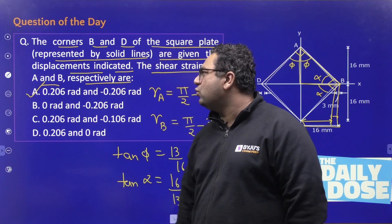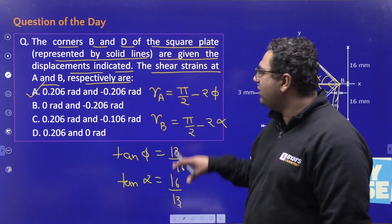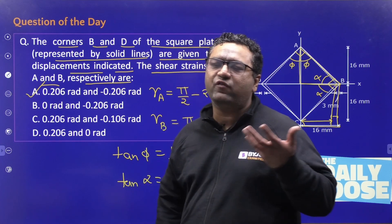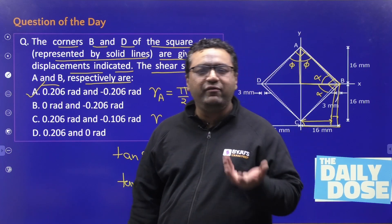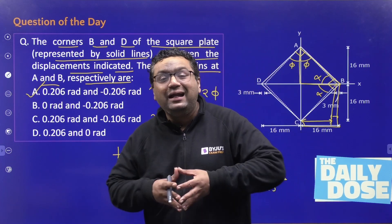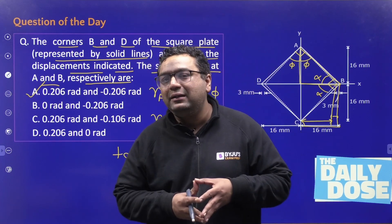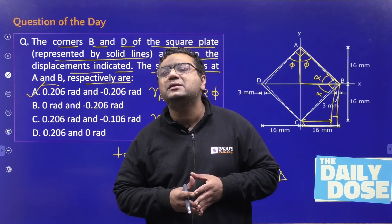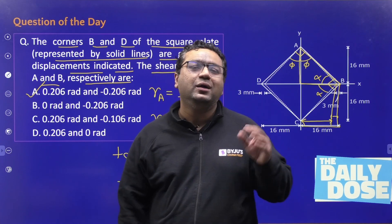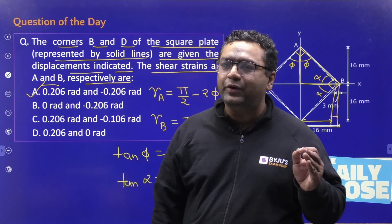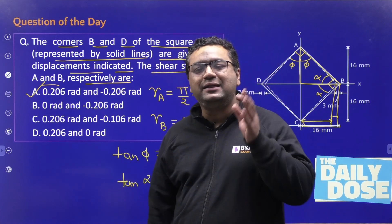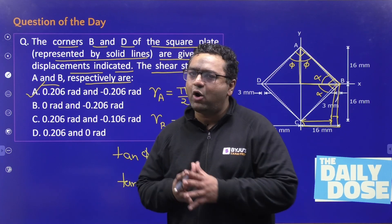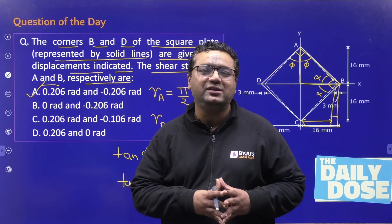Whenever we talk about shear strain, it is defined as the change of angle between two consecutive sides. If the angle is getting decreased, it is taken as positive shear. If the angle is increasing, it is taken as negative shear. This is how shear strain is defined.